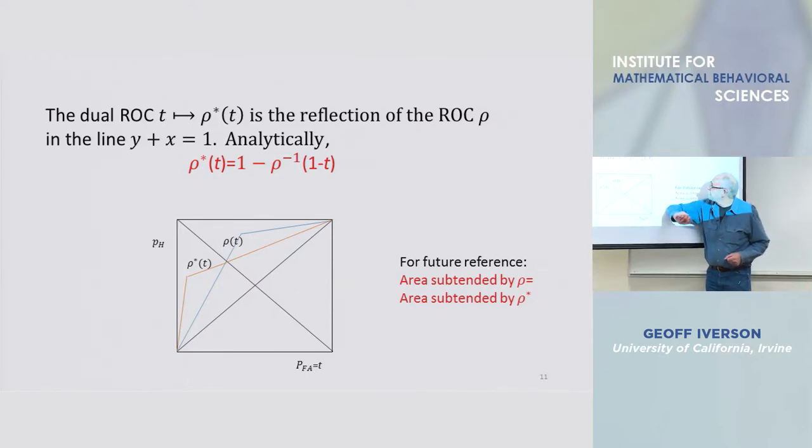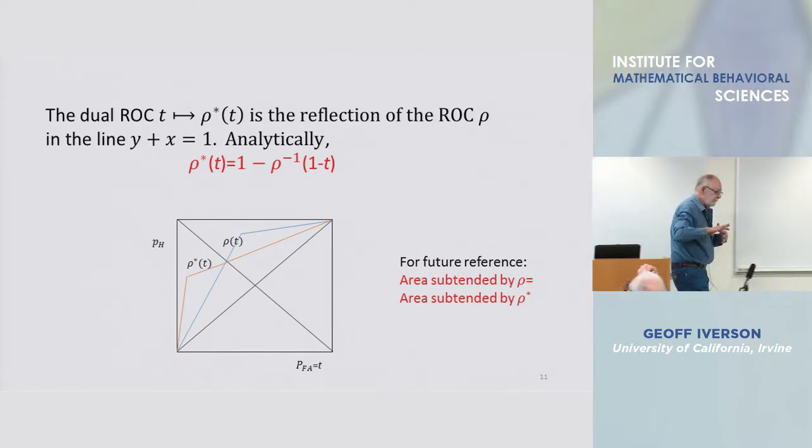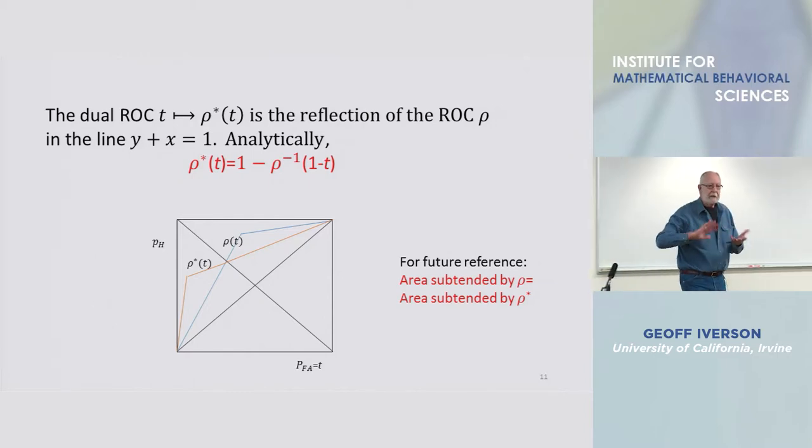The inverse is the reflection about the main diagonal x equals y, and on each side of that reflection there is a reflection in the mapping.